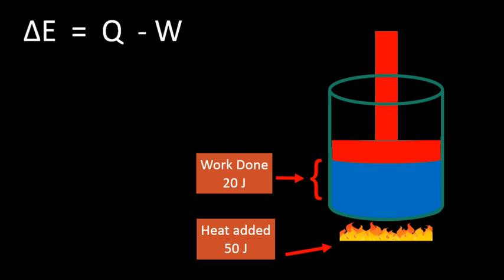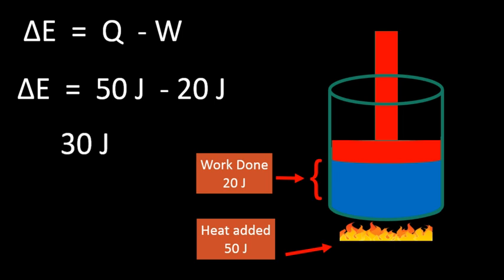From the heat added so we get our change in energy is equal to the heat that was added which was 50 joules minus the energy it took to do the work and so we end up with a total of 30 joules. All right so hopefully that whole process is clear, let's do another one just in case.